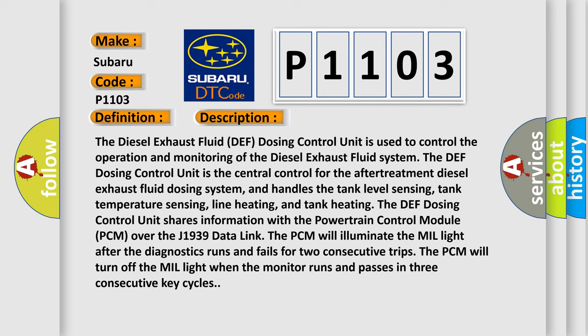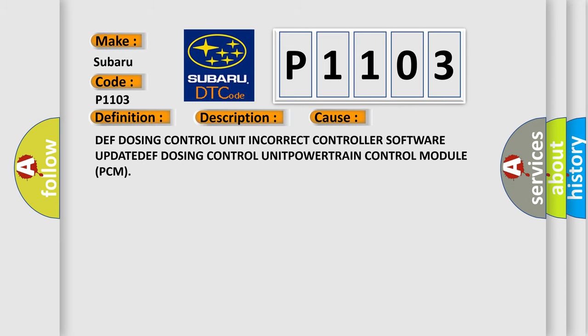The PCM will turn off the MIL light when the monitor runs and passes in three consecutive key cycles. This diagnostic error occurs most often in these cases: DEF dosing control unit incorrect controller software UPDATE, DEF dosing control UNIT, or POWERTRAIN control module PCM.